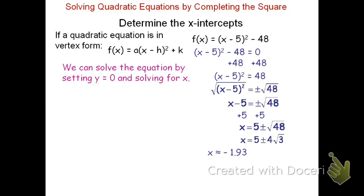5 + 4√3 and 5 - 4√3 will yield these values. 5 - 4√3 is about -1.93, and 5 + 4√3 is about 11.93. Now the problem did say find the x-intercepts. This would be the answer if it just said solve for x. If I want to find the x-intercepts, I'll now put these in coordinate form.